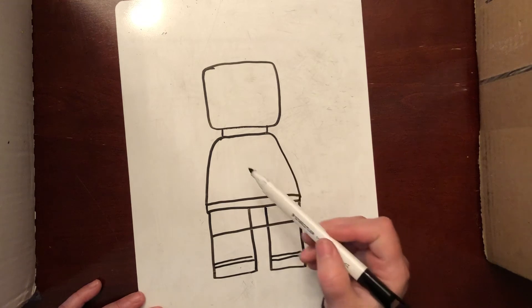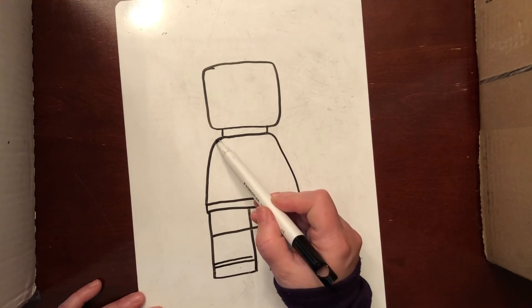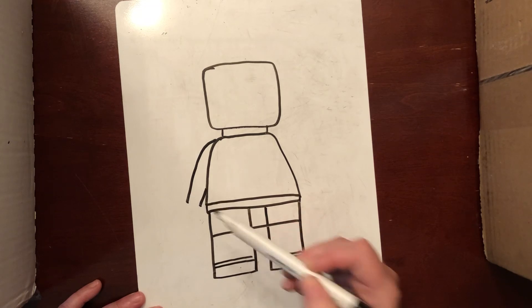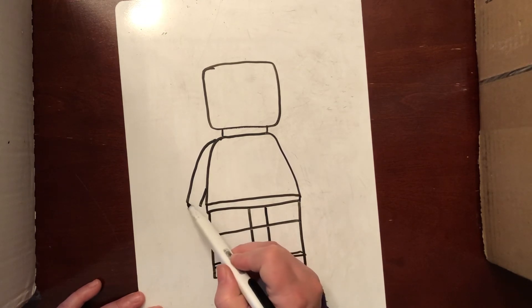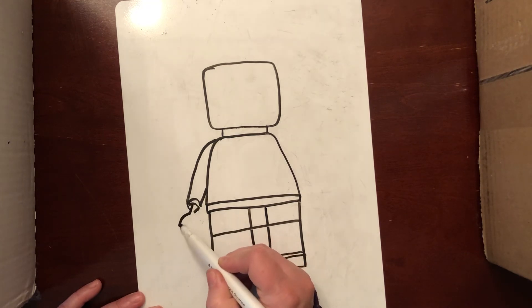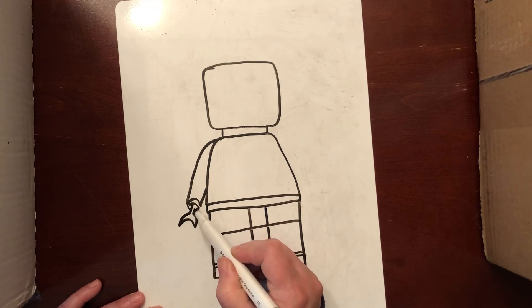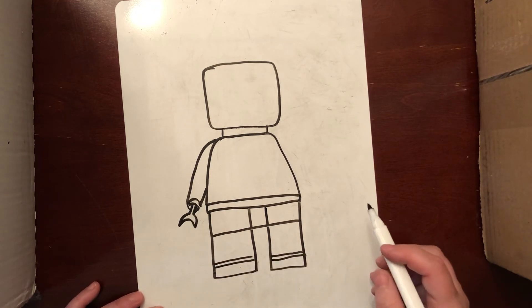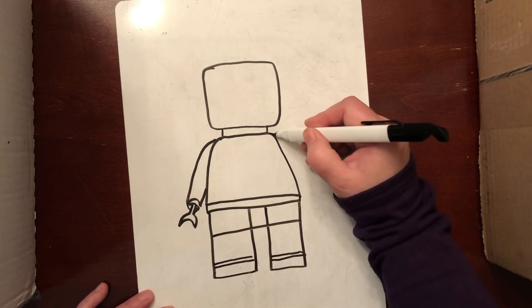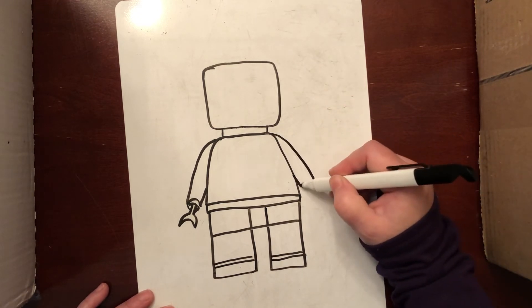Now I'm going to go back up and work on the arms. The arm is going to come out of the shoulder, just like that, and I'm going to put a little arch on it like this. The hook is going to come out here. You can make your LEGO character holding something if you'd like, or you can just put the LEGO hands on it. This is your character, so you can make it however you'd like.